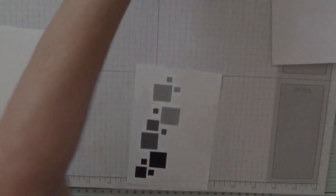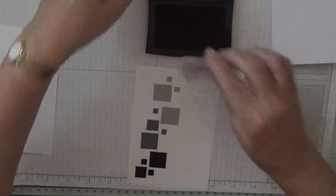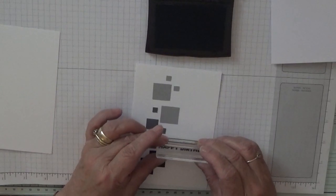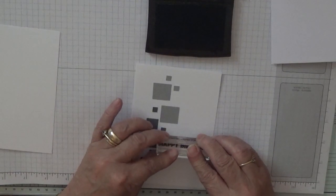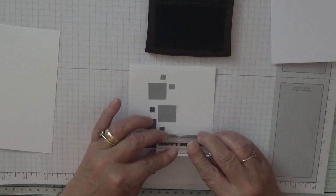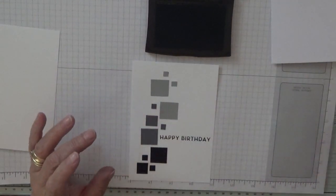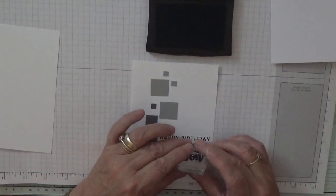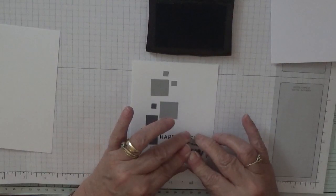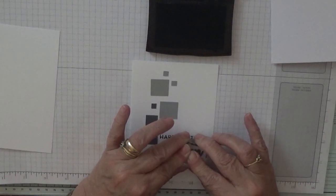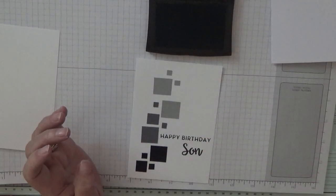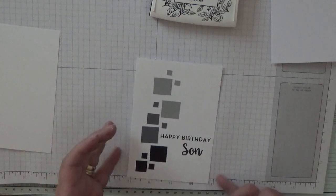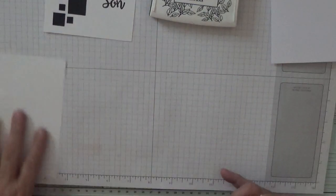Right, and now all we've got to do is stamp our sentiment. So happy birthday I'm going to pop there. And son underneath. And put that to one side.